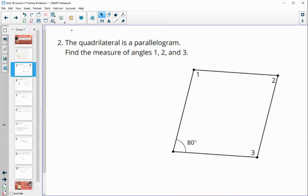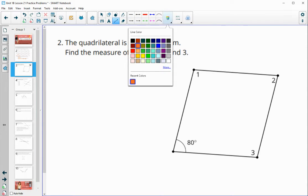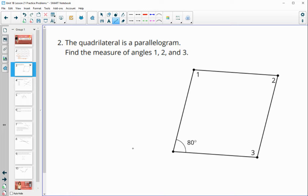Number two, the quadrilateral is a parallelogram. Find the measure of angles 1, 2, and 3. So if we want to look at this like we've been looking at parallel lines from the last couple sections. If we remember these two. So in a parallelogram, the opposite sides are parallel. So if we thought about this,